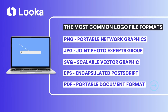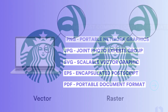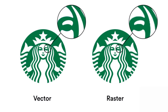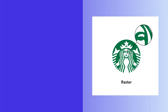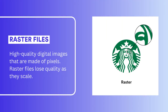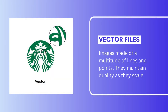We'll cover four of the most common file formats for logos: the PNG, JPG, SVG, EPS, and PDF. All these logo file formats will either be a raster or a vector file. Raster files are made of pixels, so they lose quality as they scale. Vector files are made of a multitude of lines and points, so they maintain quality as they scale.